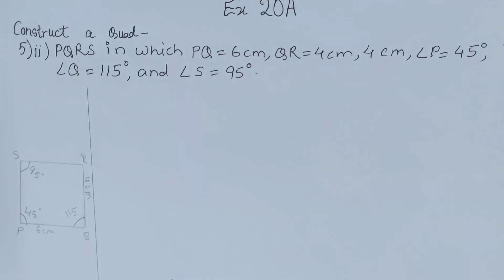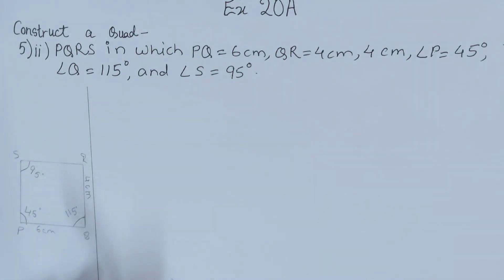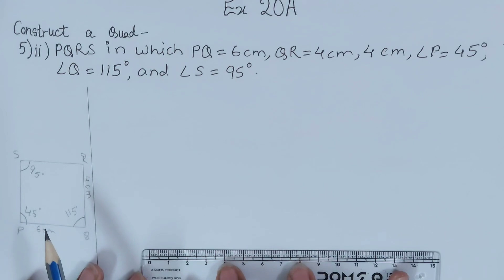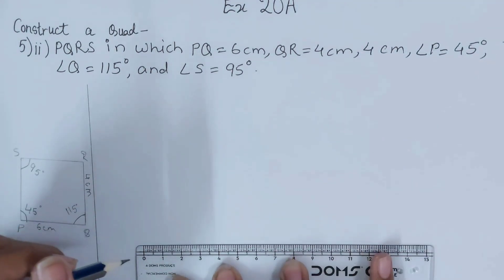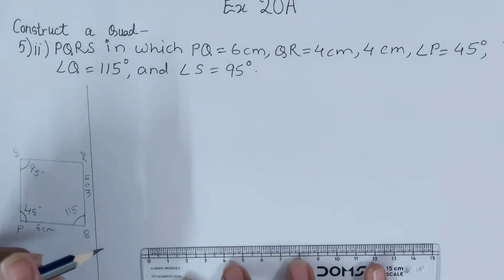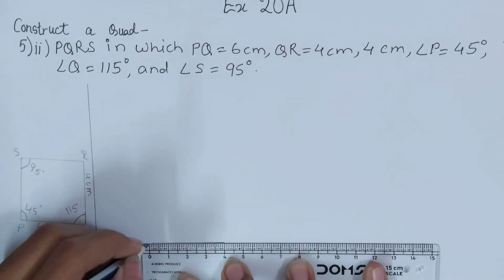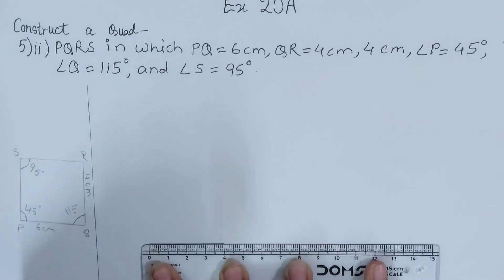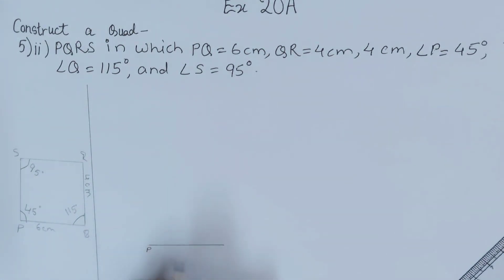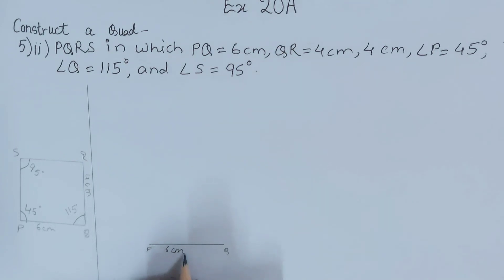First of all, we are going to draw PQ, that's 6 centimeters. We have our scale over here. This is point P and this one is point Q — we've got 6 centimeters. We need to make two angles, one at point P and one at point Q simultaneously: 115 degrees on Q and 45 degrees on P.